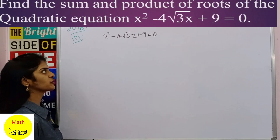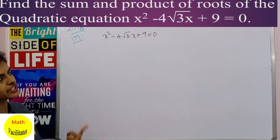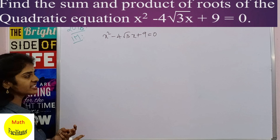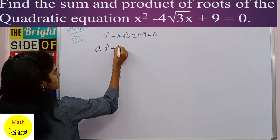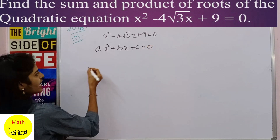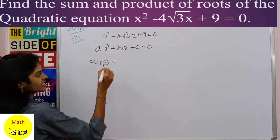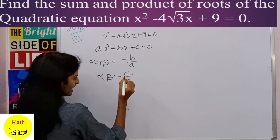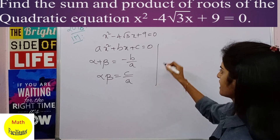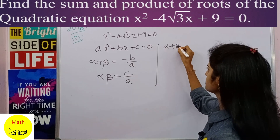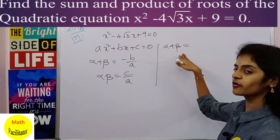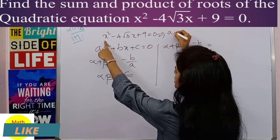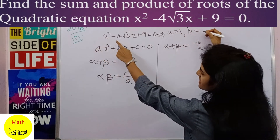Moving on to the next question: find the sum and product of the roots. This was given in 2018 and is a one-marker. For a quadratic ax² + bx + c = 0 with roots α and β, the sum of the roots is -b/a and the product of the roots is c/a. Using this, let us find α + β, which is -b/a. From the given equation, a = 1 and b = -4√3.